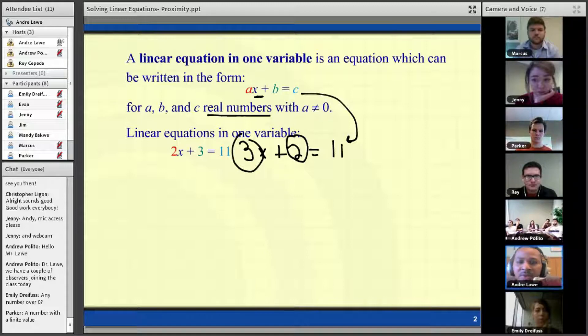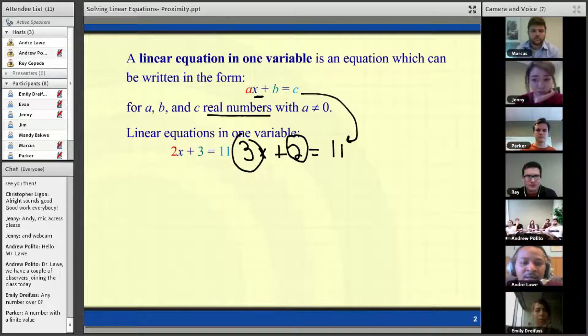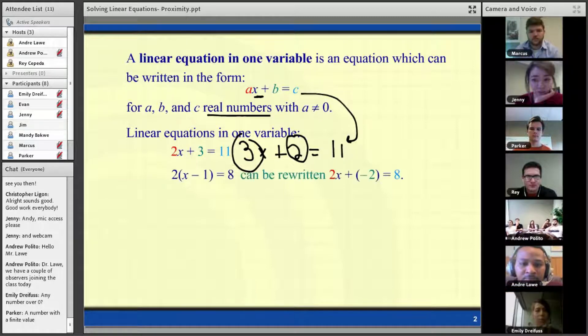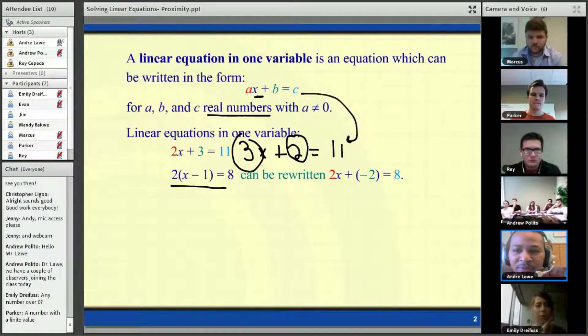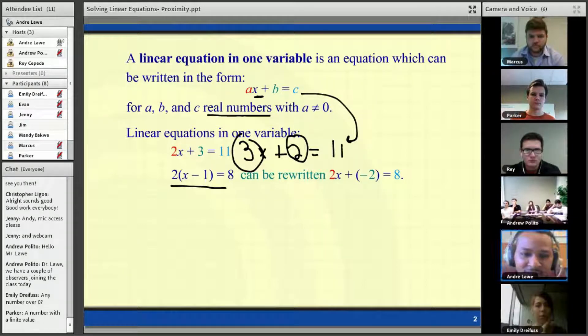And there is another example. We have 2, and then what we have in parentheses is x minus 1, equals 8. And this one is not in the standard form, but we have a property that you guys should be familiar with that we could use to simplify this, the expression on the left. So we could use the distributive property to simplify this. So how would we simplify this expression on the left using the distributive property?